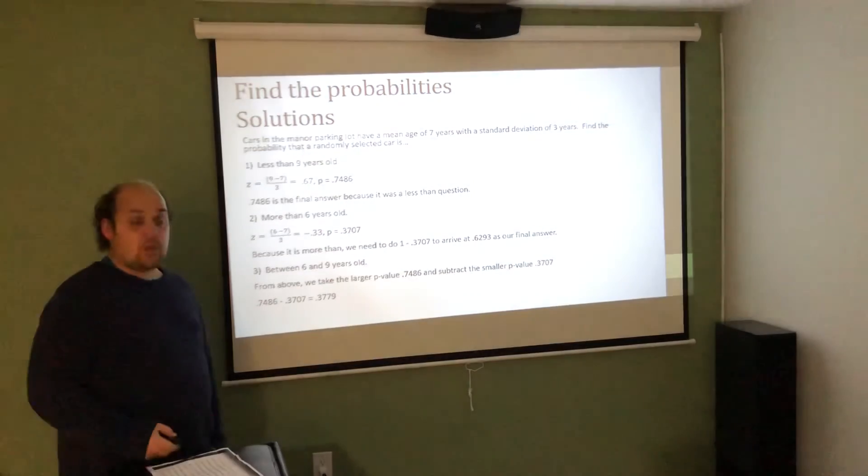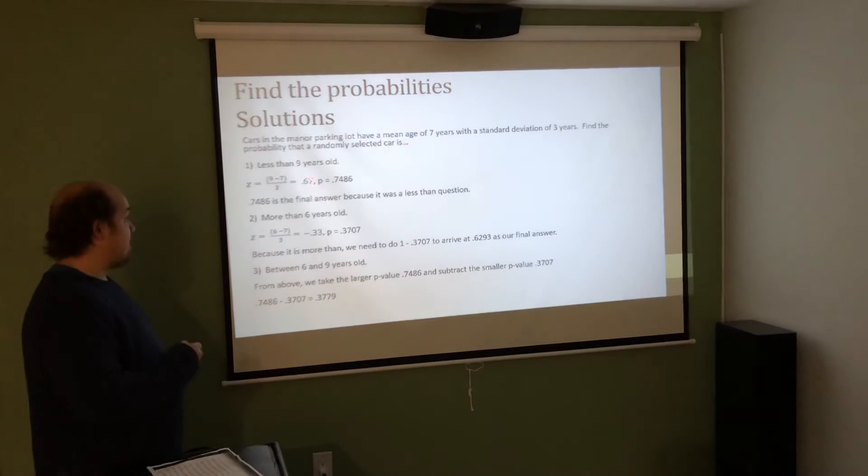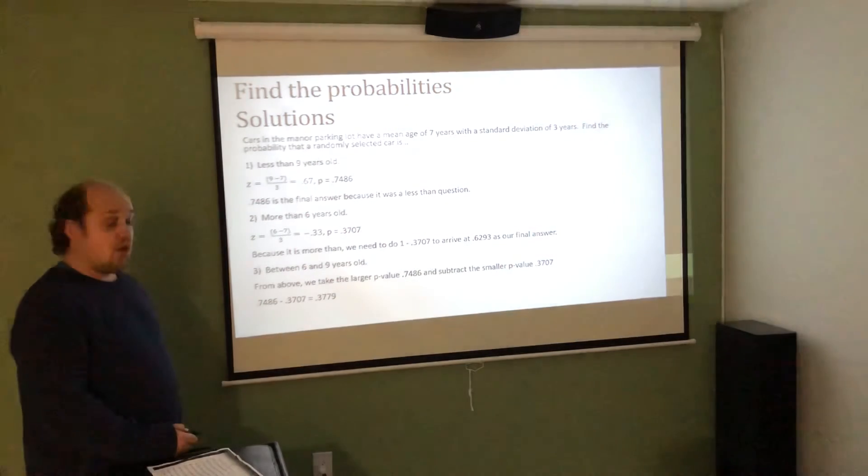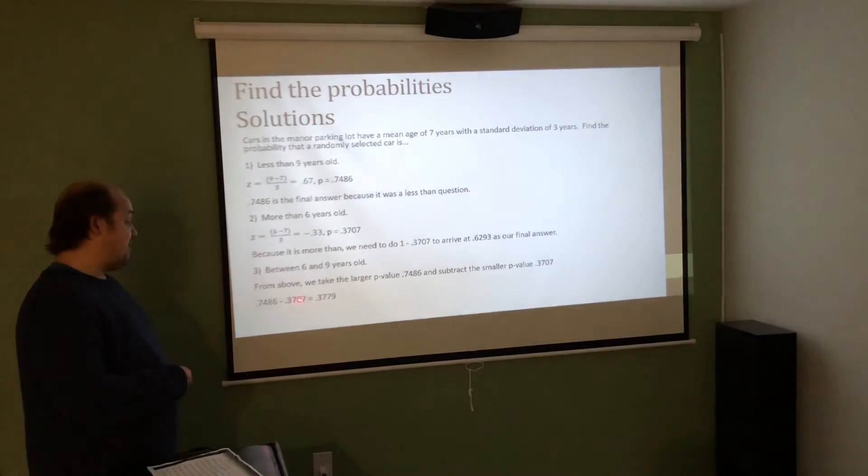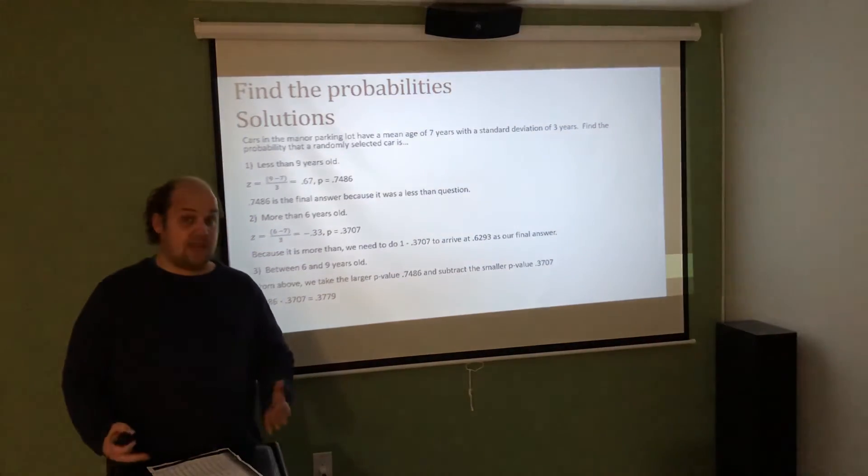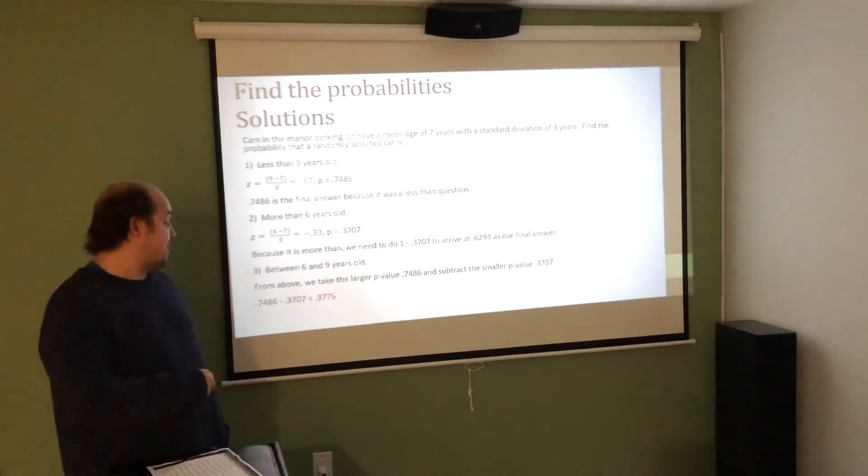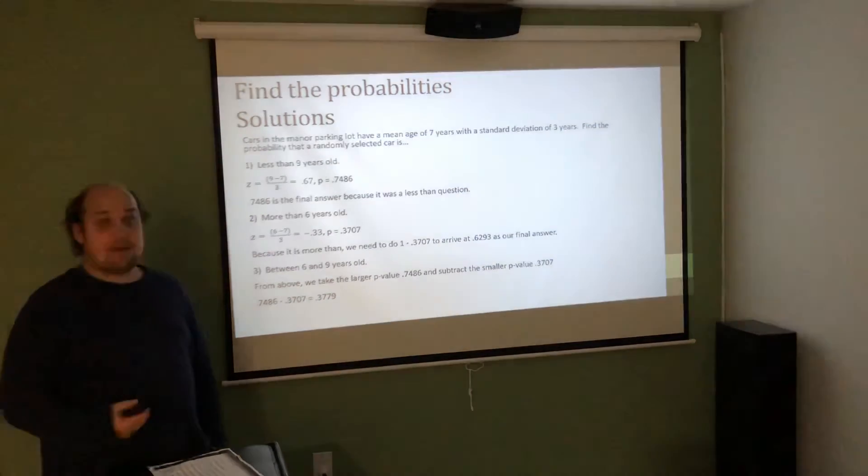For problem 3, the good news is we already found z-scores for both the ones in question. So for both 6 and 9 years old, we found z-scores. For 9, we found 0.67, which had a p-value of 0.7486. For 6, we found a z-score of negative 0.33, which had a p-value of 0.3707. So if we're looking for the probability between these two, we're just going to take the larger p-value, 0.7486, minus the smaller p-value, 0.3707. When I do that math, 0.7486 minus 0.3707 gives me 0.3779. Meaning, based on this information, if the true mean of the age of cars was 7 years and the true standard deviation was 3 years, then we'd expect 37.79% of the cars on campus to be between 6 and 9 years old.